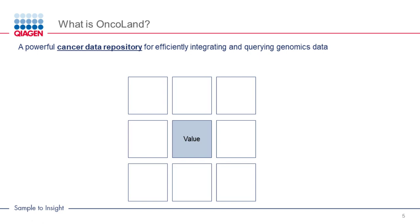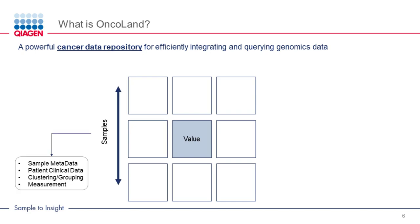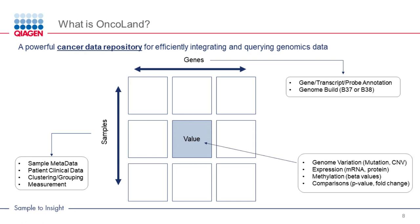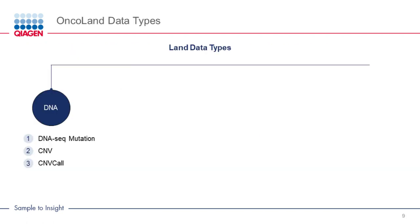Oncoland can be viewed as a large matrix. On the y-axis is sample-level data, which includes sample-level metadata, patient clinical data, sample-level grouping or clustering information, and sample-level measurement data. On the x-axis is gene-level data, including transcript annotations and different genome builds. The value of each cell is actual genomic data, which includes mutations, copy number variations, expression of a gene or protein, and methylation data.